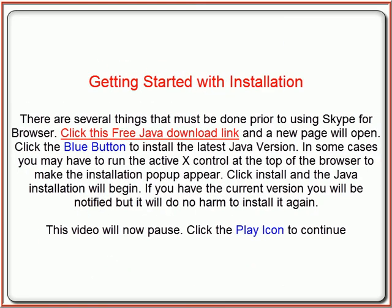Getting started with installation — there are several things that must be done prior to using Skype for Browser. Click the free Java download link and a new page will open. Click the blue button to install the latest Java version. In some cases you may have to run the ActiveX control at the top of the browser to make the installation pop-up appear. Click Install and the Java installation will begin. If you have the current version, you will be notified, but it will do no harm to install it again.